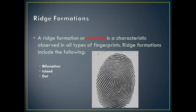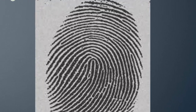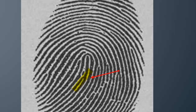The individualizing characteristics, often called minutiae, can take the form of, but are not limited to, bifurcations, islands, and dots. Bifurcations are similar to a fork in the road where the road splits. Islands are ridges that stand alone in formations between the ridge lines in a print. Dots are formations that have the appearance of what a period would look like in grammatical punctuation.